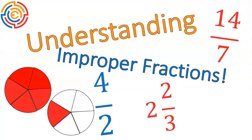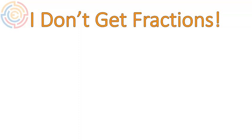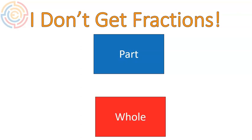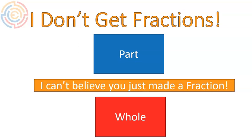Improper fractions are fractions that look kind of like this. If you're saying to yourself, I don't understand fractions, I just don't get them, I want you to understand that there is a part that goes in the numerator or on the top of the fraction and then there's a whole and that goes on the bottom of the fraction and boom! We just made a fraction! So exciting. Let's do a quick review of what a fraction looks like and then we'll talk about improper fractions.